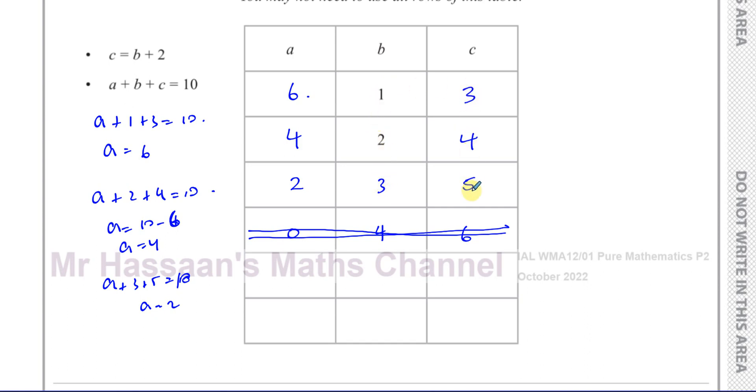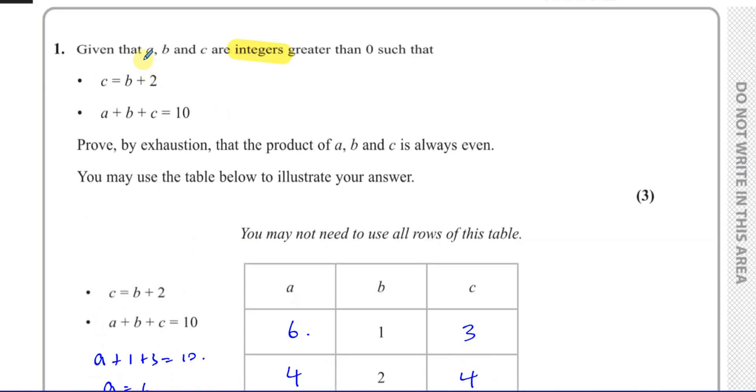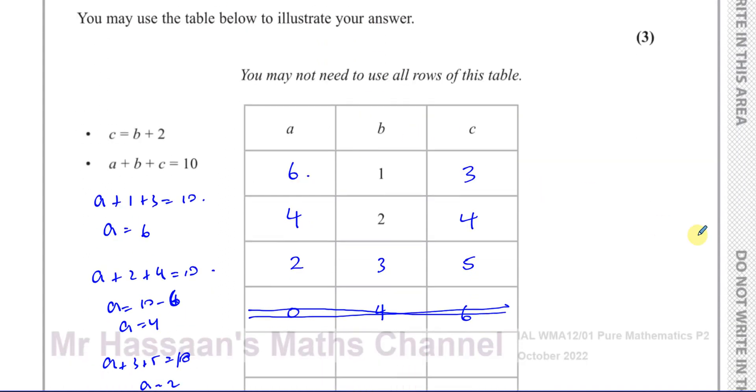And therefore, C will be three, four, and five, and A will be six, four, and two. Those are the only possible combinations we can have. So it's telling us that given that A, B, and C are integers greater than zero, show that C equals B plus two, such that C equals B plus two, and A plus B plus C equals ten, prove by exhaustion that the product of A, B, and C is always even. So all we have to do now, we can add another column to this.